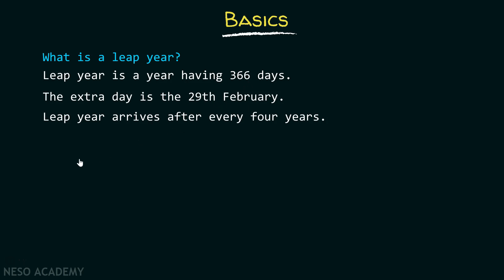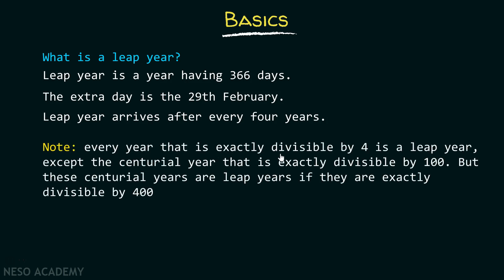Please note that every year exactly divisible by 4 is a leap year, except centurial years that are exactly divisible by 100. However, those centurial years are leap years if they are exactly divisible by 400. So a centurial year is not a leap year if divisible by 100, but it is a leap year if divisible by 400.